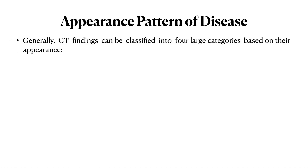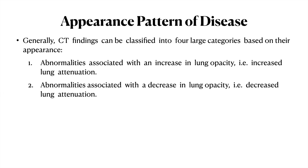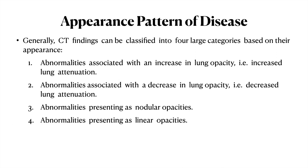Coming to the appearance pattern of the disease: CT findings can be classified into four large categories based on their appearances. The first is abnormality associated with an increase in lung opacity, that is increased lung attenuation. The second is abnormality associated with decrease in lung opacity. The third is abnormality present as nodular opacities. And the fourth is abnormality present as linear opacities.